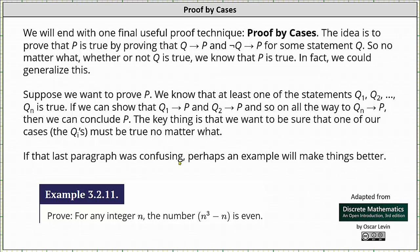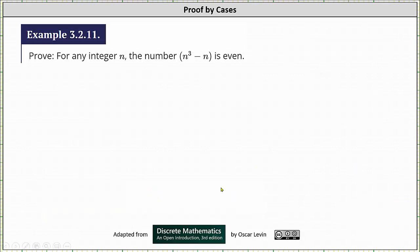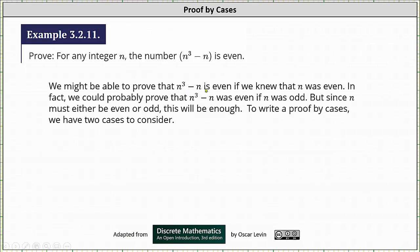If the last paragraph was confusing, perhaps an example will make things better. Let's work on proving for any integer n the number n³ - n is even. We might be able to prove that n³ - n is even if we knew that n was even. In fact, we could probably prove that n³ - n was even if n was odd. But since n must be either even or odd, this will be enough. To write a proof by cases, we have two cases to consider.